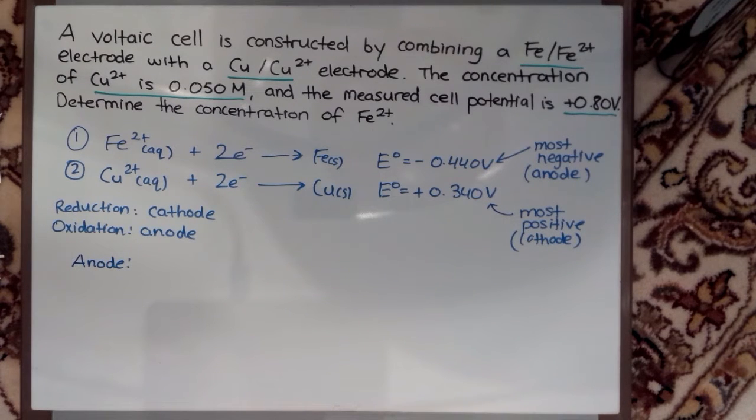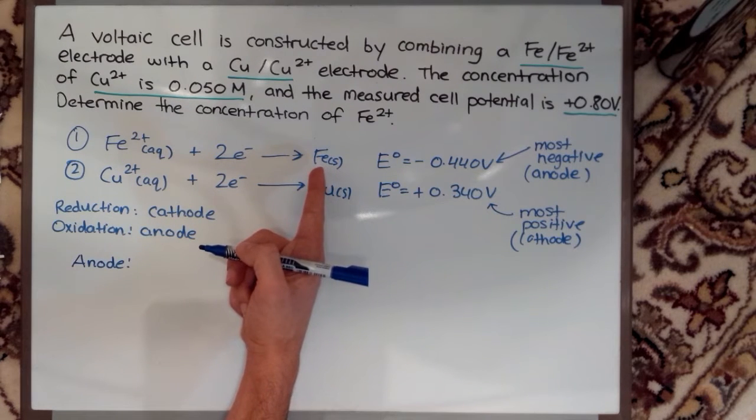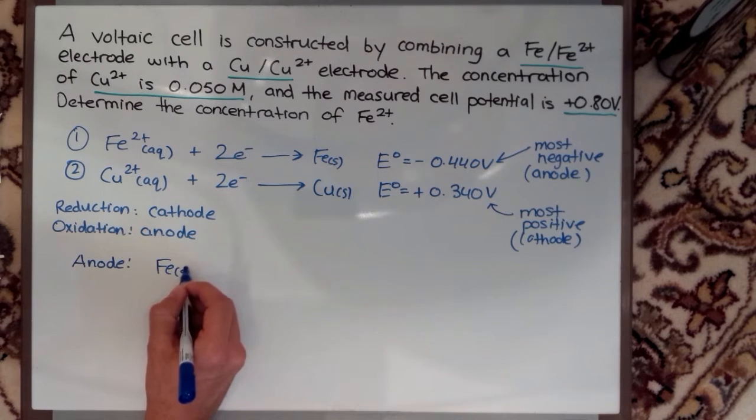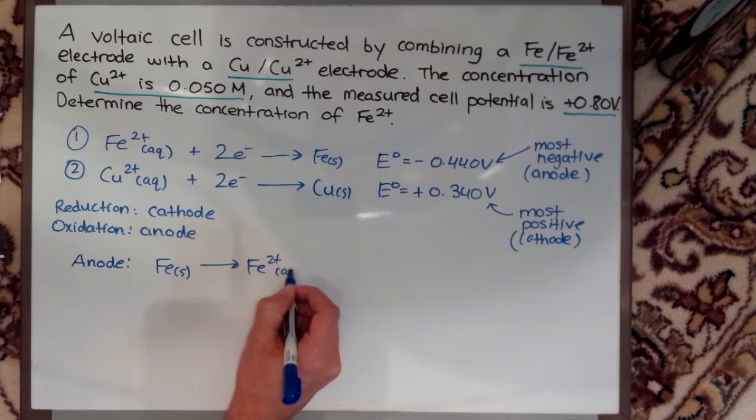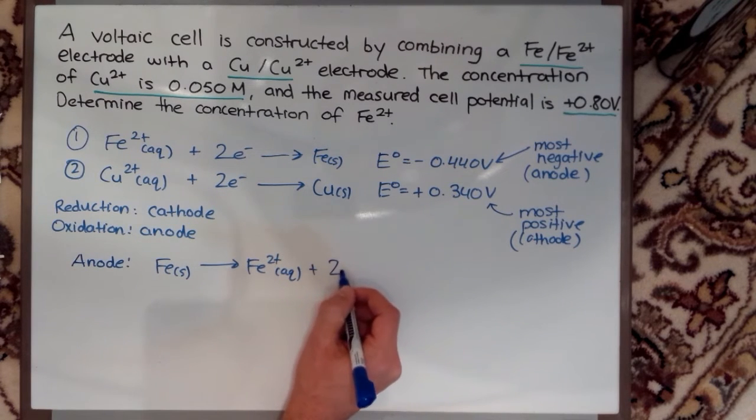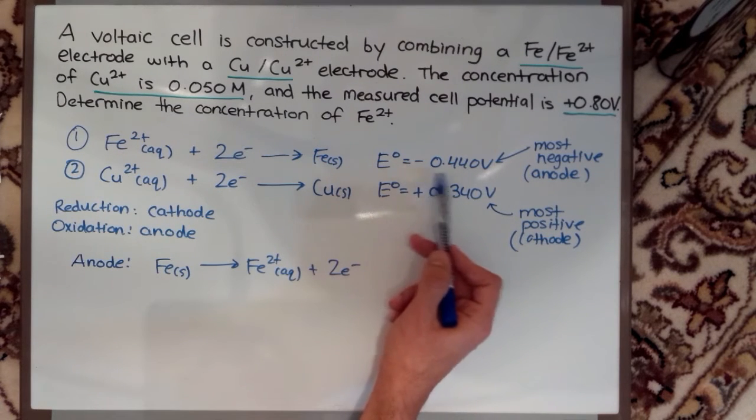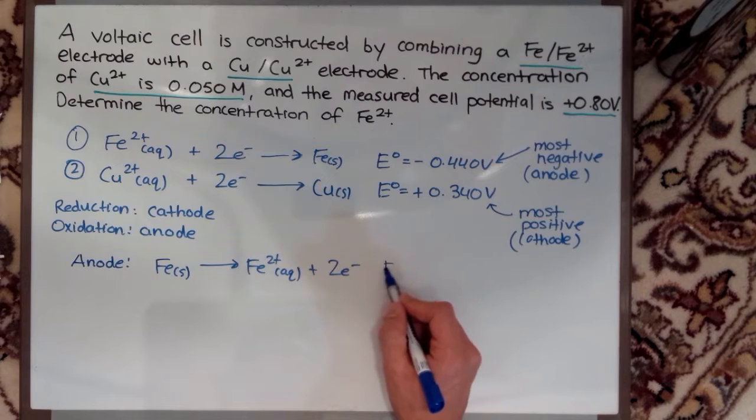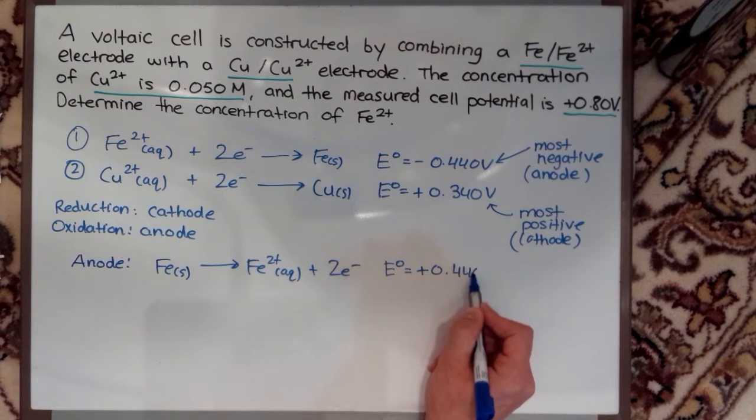The anode reaction is just going to be the flipped or reverse reaction of what we have here. So we have Fe solid goes to Fe2+ plus my two electrons. Now because I flipped the equation, this reduction potential has to become positive. It was negative 0.440, now my reduction potential is positive 0.440 volts.